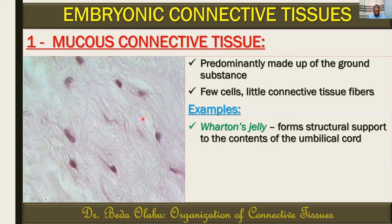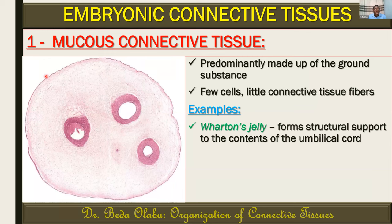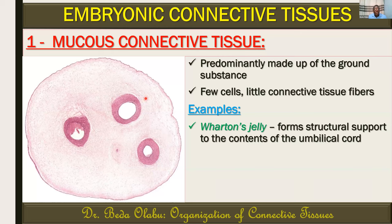Examples of mucous connective tissues include Wharton's jelly. Wharton's jelly is a mucous connective tissue located within the umbilical cord of the fetus or embryo, and it provides structural support for the contents of the umbilical cord. A histological cross-section of the umbilical cord shows blood vessels — the two umbilical arteries and the umbilical vein, which is usually one as we approach the second and third trimester of pregnancy. The region consisting of the mucous tissue is specifically called Wharton's jelly.